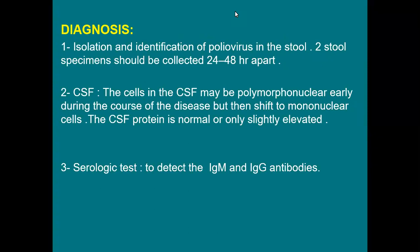For diagnosis of poliomyelitis, since the virus is secreted in the stool, we isolate and identify the virus in the stool. Two stool specimens should be collected 24 to 48 hours apart for a definitive diagnosis. We can also do a lumbar puncture and take CSF if there is CNS involvement. In CSF, there will be polymorphonuclear cells early during the course, shifting to mononuclear cells, with protein normal or only slightly elevated — a picture of aseptic meningitis. Serological tests can detect IgM or IgG antibodies.